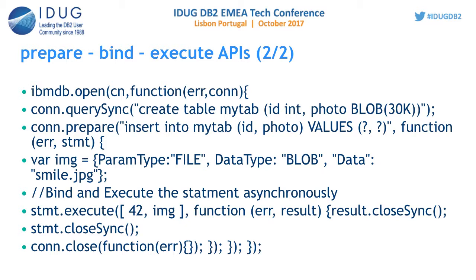Here we are just passing the file name. The picture name is smile.jpg. We want to store this picture into the database server in the blob column. This is a special mechanism to form the binding parameter syntax and pass it as an object.